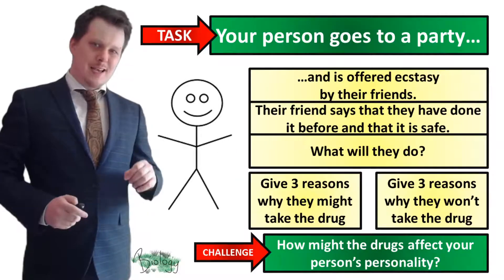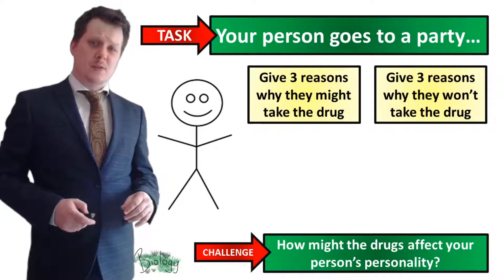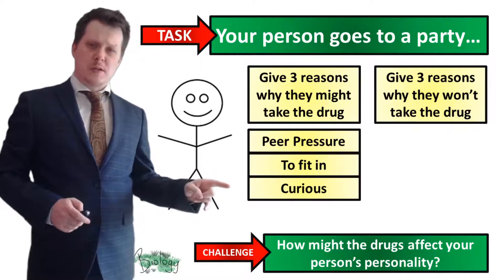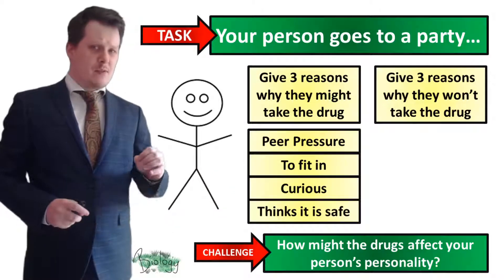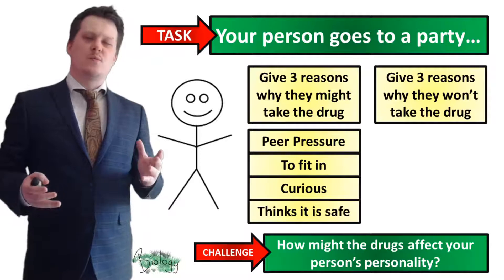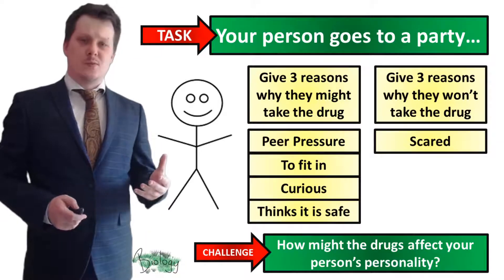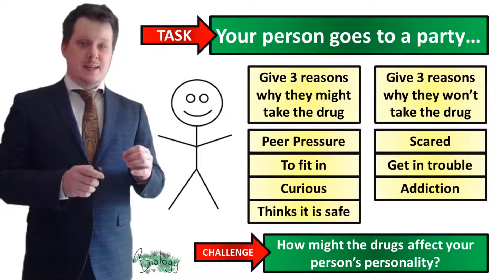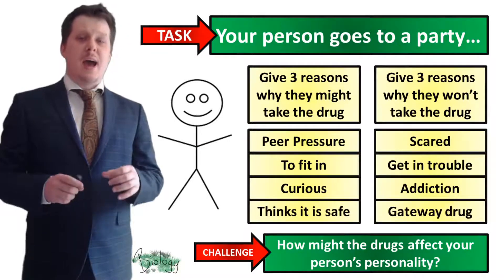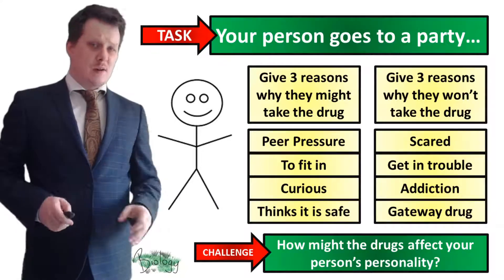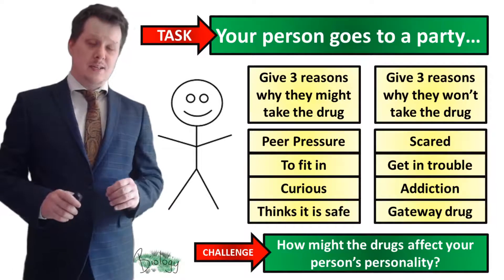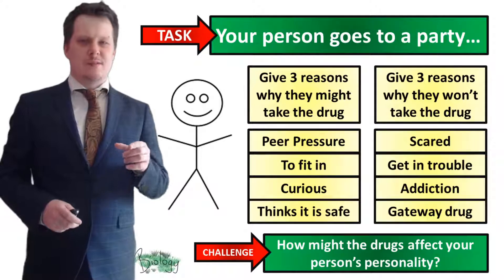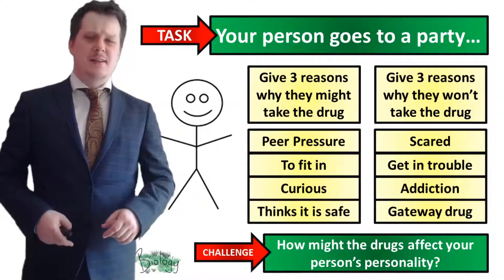Some reasons why your person might take the drug: peer pressure or to fit in, since all their friends are doing it; curiosity about the drug; and believing it's safe because their friends said so. Some reasons why they wouldn't: being scared of what the drug may do; worried about getting into trouble; scared of becoming addicted later in life and seeing it as a gateway drug — taking this drug now makes them more likely to do other drugs later. If you've described how the drug would affect your person's personality, I'd like to hear about it in the comments below.